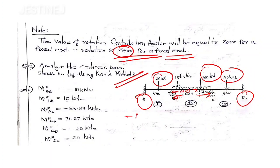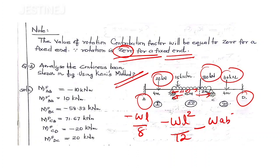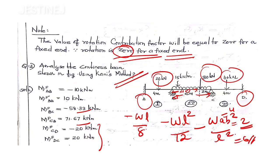The first step is to calculate the fixed end moment values. For the load acting at the center point, the formula is minus wl by 8. For span BC, first calculate the UDL contribution using minus wl-squared by 12, then the 30 kilonewton point load contribution using w·a·b-squared by l-squared, where a equals 4, b equals 2, and l equals 6. For span CD, use minus wl by 8.